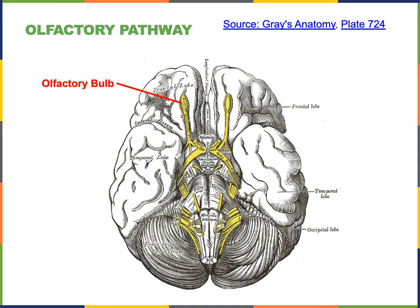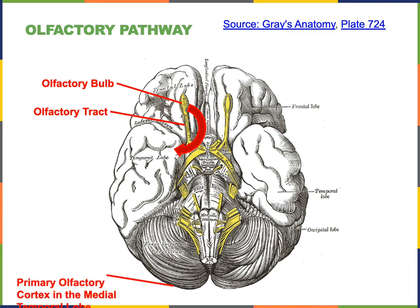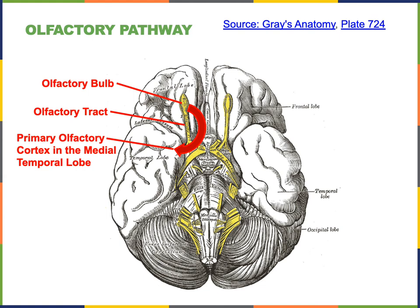Each mitral cell receives information from only one of the 1,000 distinct types of olfactory receptors, so there are approximately 1,000 distinct types of mitral cells in the olfactory bulbs. The axons of mitral cells then travel in the olfactory tract to reach the primary olfactory cortex in the medial temporal lobe of the cerebrum, where the process of perception for the olfactory modality begins.